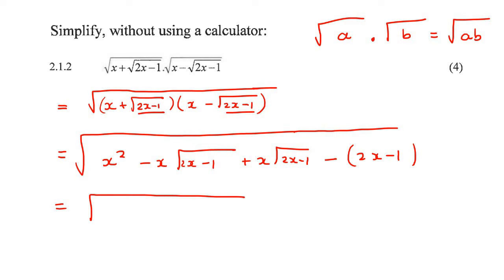So now we can just go ahead and neaten up. What I want you to notice is that this part and this part cancels out completely. So what we're left with now is x squared minus 2x plus 1.